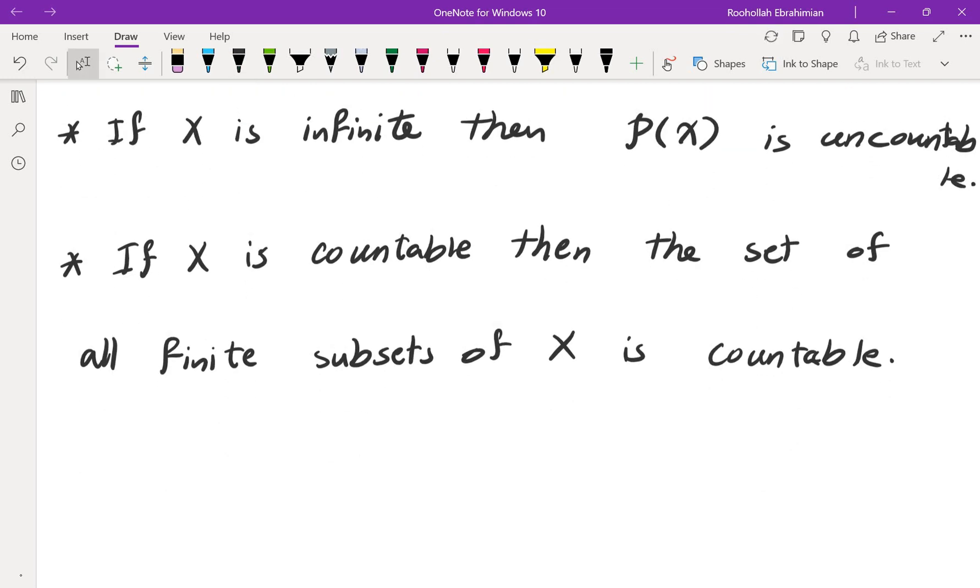The second one can be proved by showing that if you take the set of all subsets of X where the size of A is at most n, this is countable. You can prove that by induction based on the fact that if you want to create a set of size n plus 1, you need a set of size n, and then you take the union of that with an element of the set.